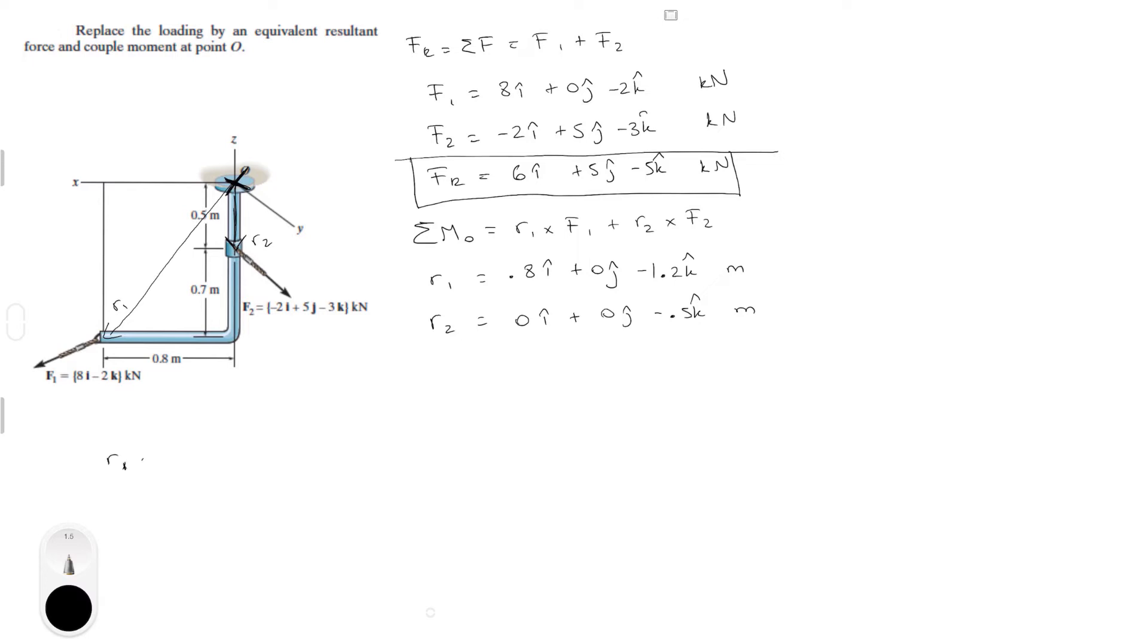R1 cross F1. i, j, k. R1 is 0.8, 0, and minus 1.2. And F1 is equal to 8, 0, and minus 2. So we rewrite first and second column.